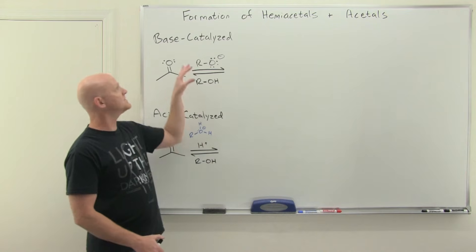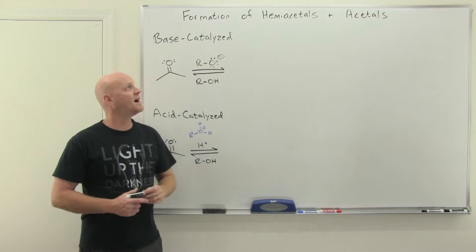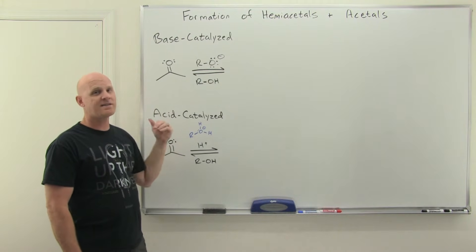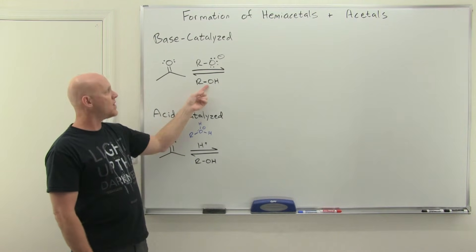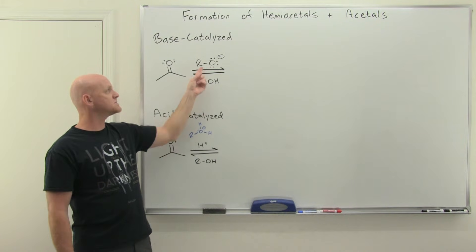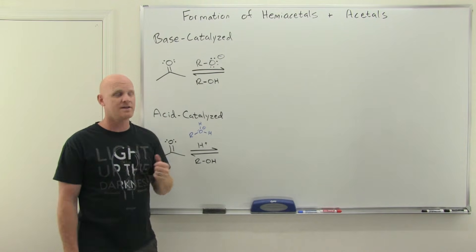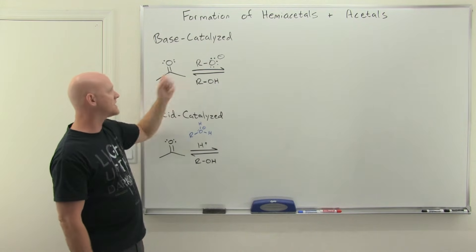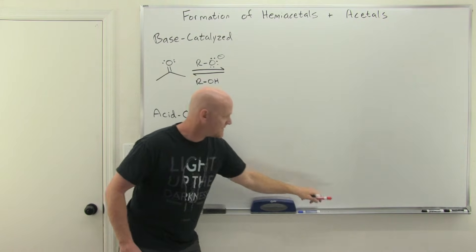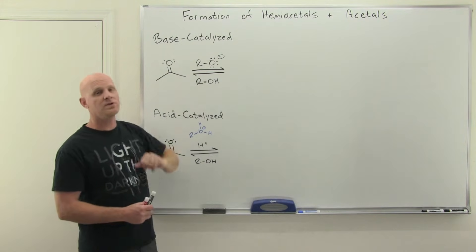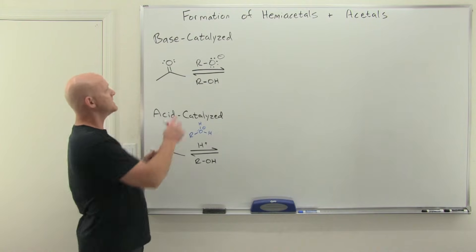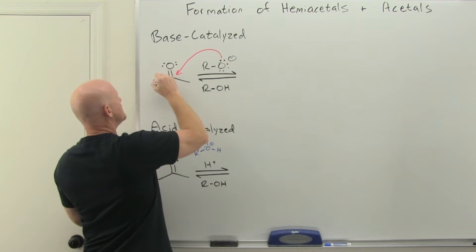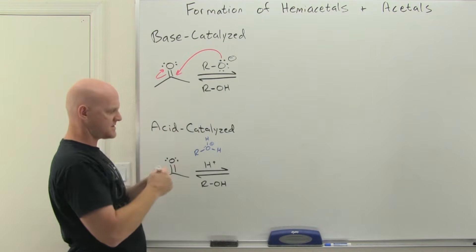We'll start with base-catalyzed formation of a hemiacetal. With base catalysis, you don't just add an alcohol with a generic base — you add an alcohol with its specific conjugate base. So if this were methanol, you'd add sodium methoxide; if ethanol, sodium ethoxide. The corresponding alkoxide is the specific base added. Alkoxides are very strong nucleophiles, just like hydroxide, and with strong nucleophiles you can attack the ketone or aldehyde carbonyl carbon directly. So the first step is nucleophilic attack — push the pi electrons up to the oxygen.